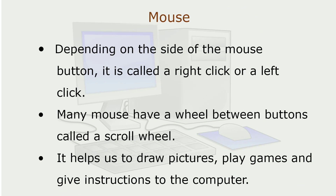Depending on the side of the mouse button, it is called a right click or a left click. Many mice have a wheel between the buttons called a scroll wheel. It helps us to draw pictures, play games, and give instructions to the computer.